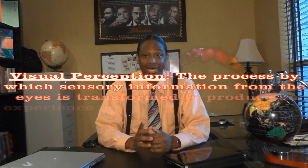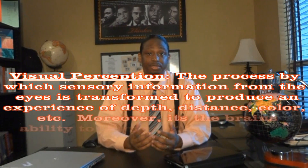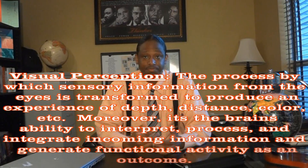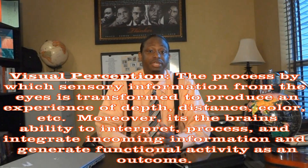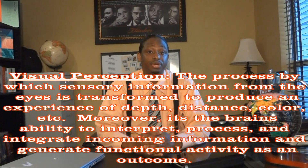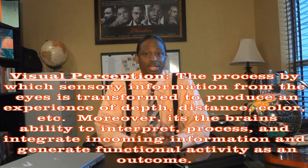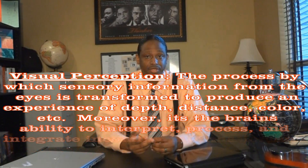The medical definition of visual perception is that it's the process by which sensory information from the eyes is transformed to produce an experience of depth, distance, color, etc. Moreover, it's the brain's ability to interpret, process, and to integrate incoming information and generate functional activity as an outcome.